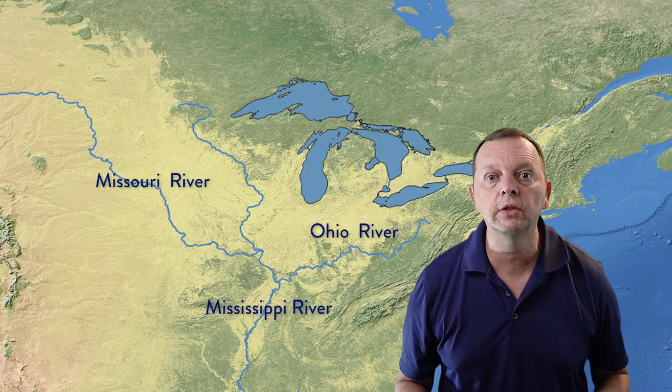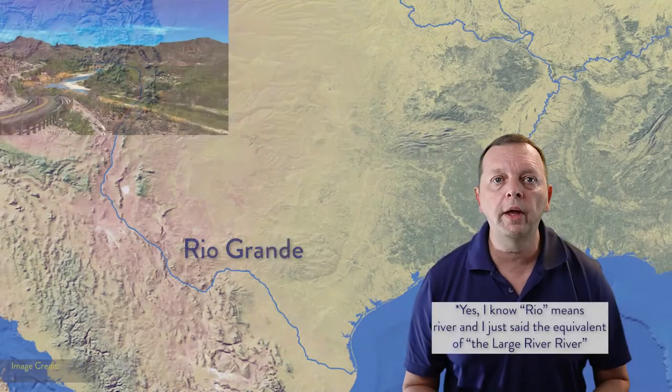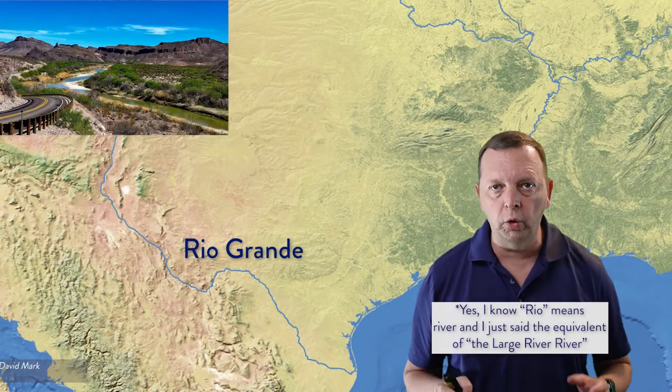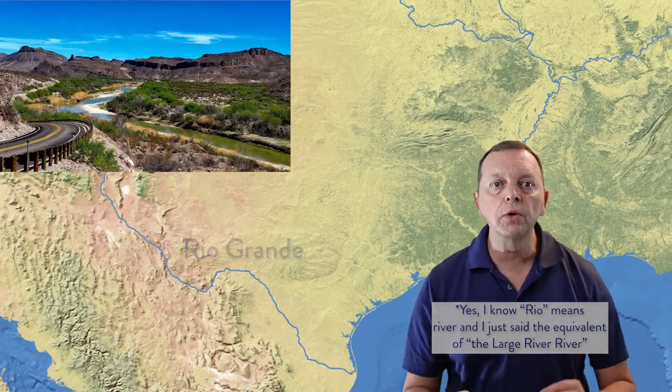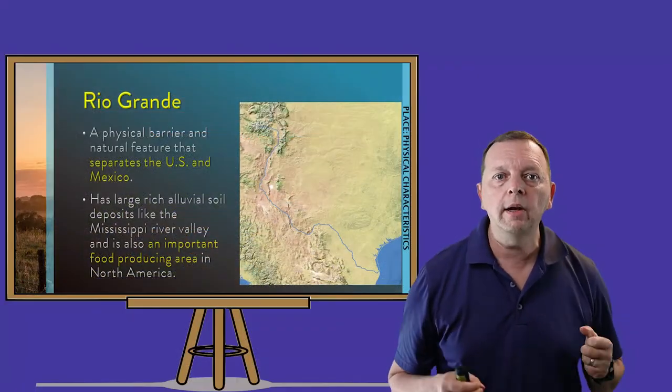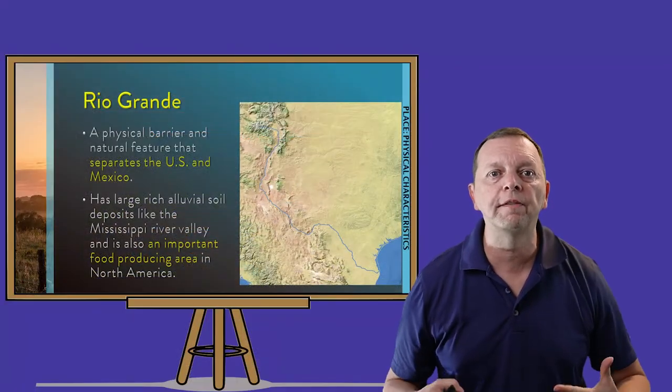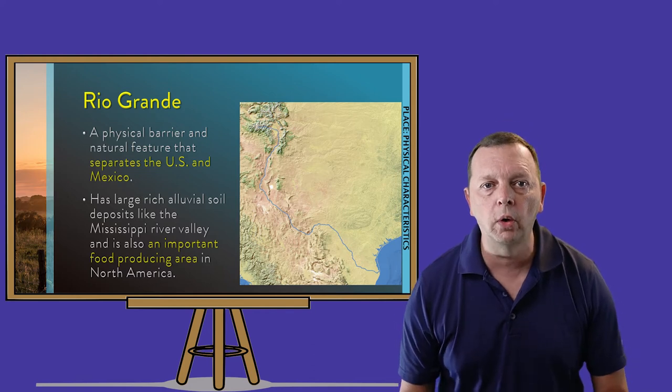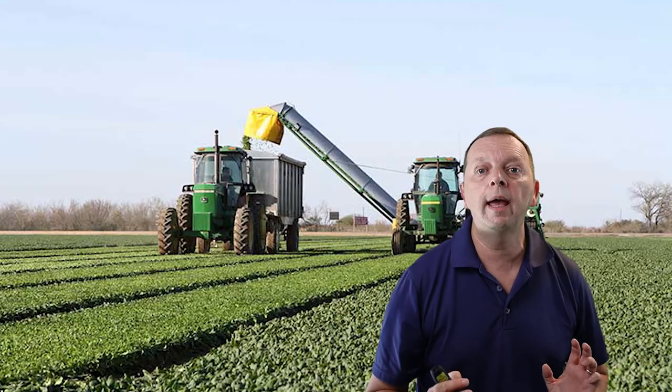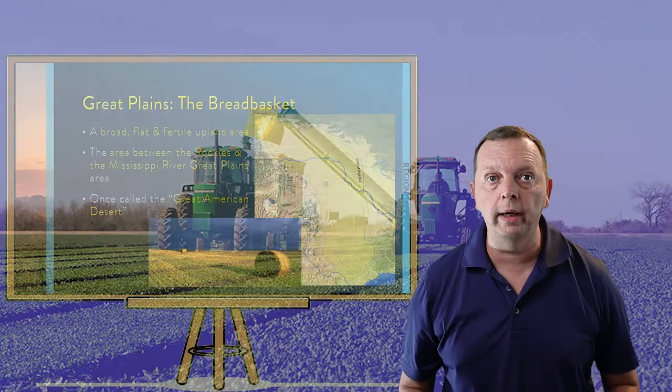Some of the largest American cities were founded on these river shores. While not nearly as large as the Mississippi River, the Rio Grande River also plays a significant role. First, it forms the natural boundary between the United States and Mexico. It has also deposited lots of fertile alluvial soil, so just like the Mississippi River, the Rio Grande has made the area around it an important agricultural area.